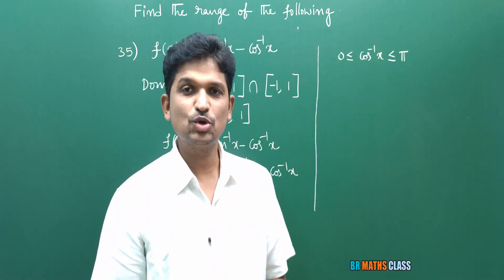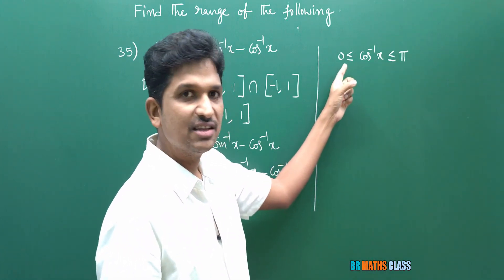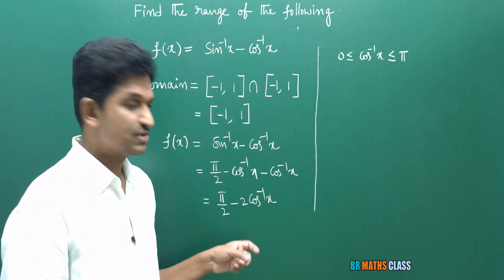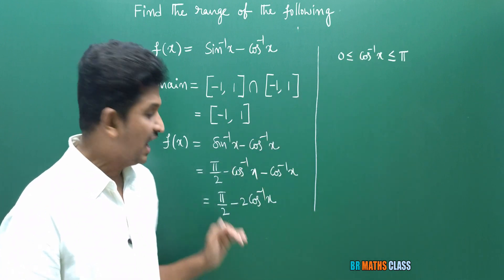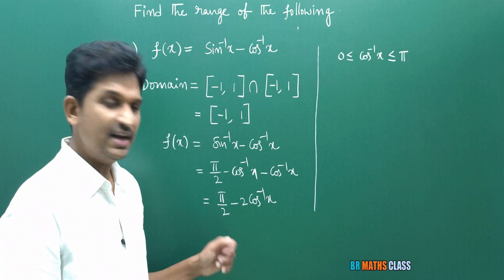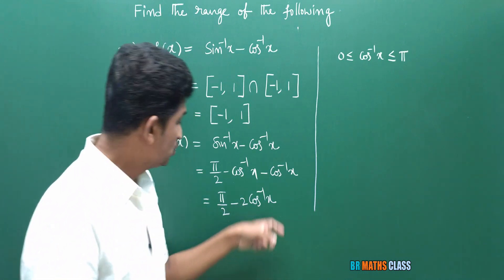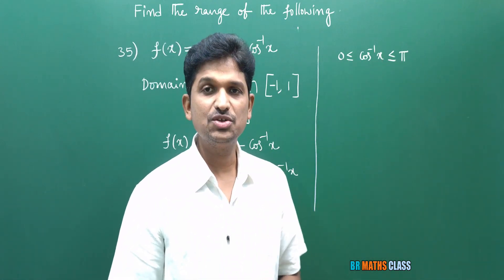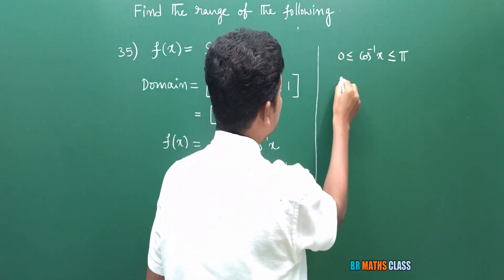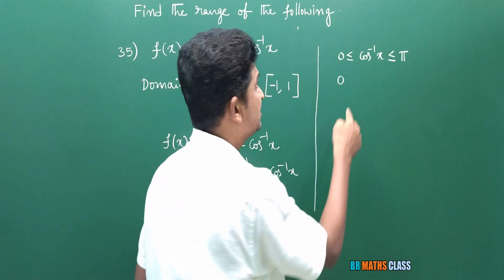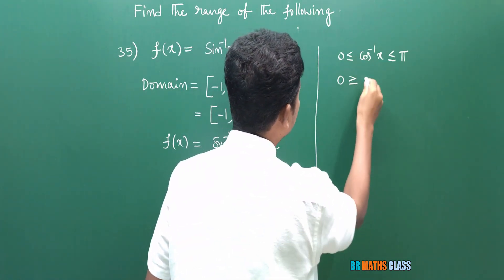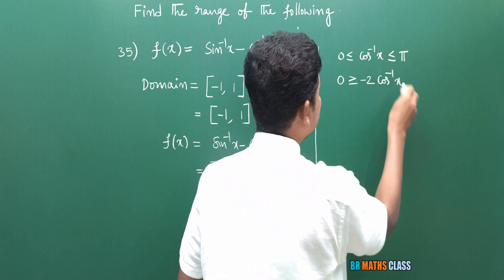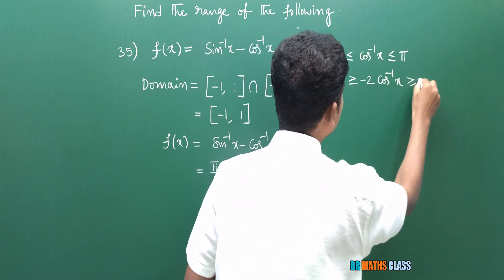The range of cos⁻¹x is the closed interval [0, π], which means 0 ≤ cos⁻¹x ≤ π. To get the expression −2cos⁻¹x, I multiply this complete inequality by −2. Since I am multiplying by a negative number, the inequality signs reverse: 0 ≥ −2cos⁻¹x ≥ −2π.